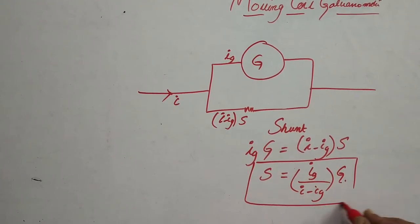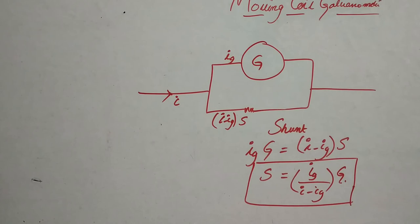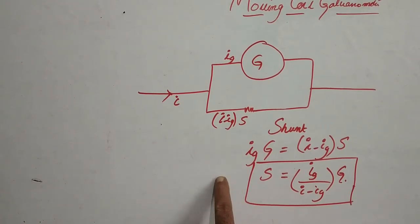This is the value of shunt that is required to convert the galvanometer into an ammeter. Ammeters are always connected in series and voltmeters are always connected in parallel.